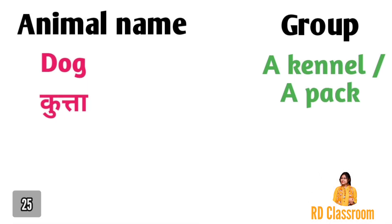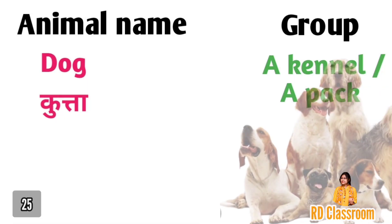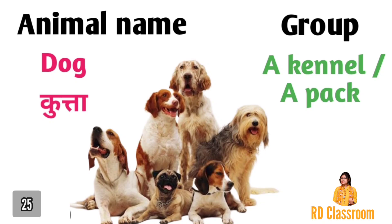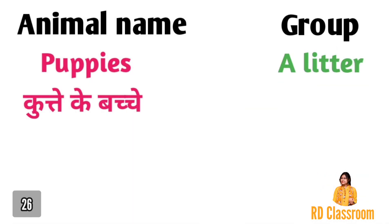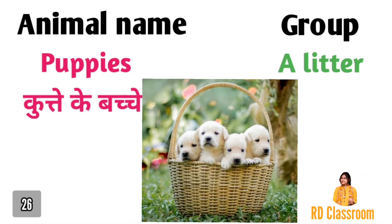Number twenty-five is dog, ya fir kutta, jiske group ko kaha jata hai a kennel ya fir a pack. Number twenty-six is puppies, ya fir kutte ke bachche, jiske group ko kaha jata hai a litter.